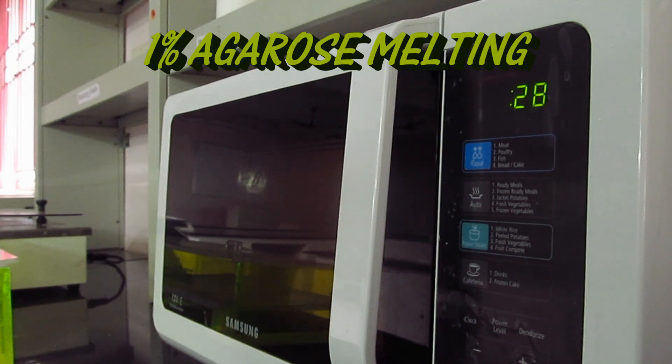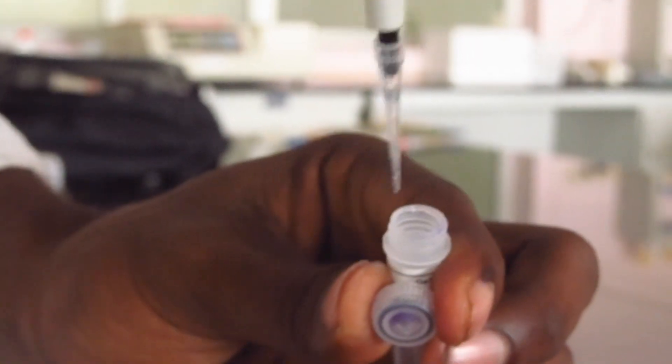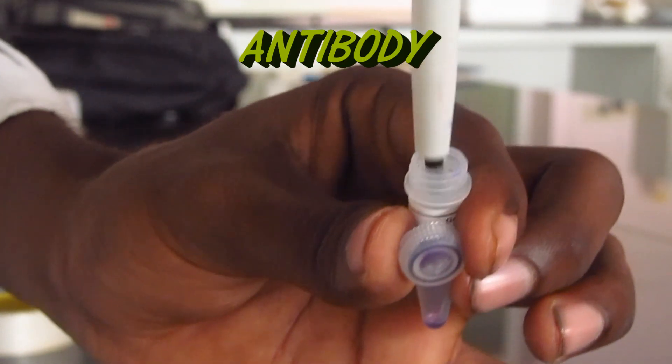Melt 1% of agarose with electrophoresis buffer. Add antibody in the gel when its temperature reduces.